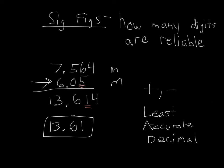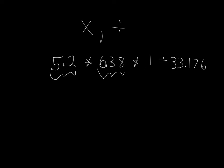There's one other way that you can actually combine measurements. For some reason, you might need to multiply or divide measurements. There's a new rule that governs how you do that. If I want to do multiplication or division, let's say I have a measurement of 5.2 times a measurement of 6.38 times a measurement of 1. I can multiply all these numbers together, I get a number 33.176.